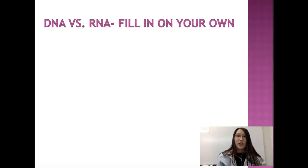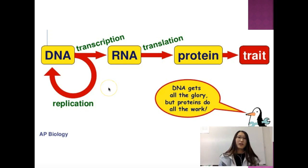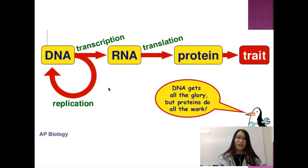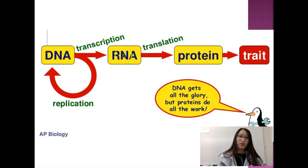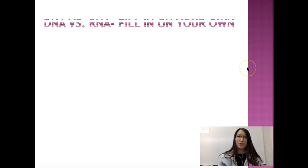Looking at this picture, it shows you the processes we've learned. DNA can replicate — we call it DNA replication, done by DNA polymerase. DNA is transcribed into RNA — this process is called transcription — and we have RNA being translated into proteins. Eventually it's the proteins that allow you to have certain traits.